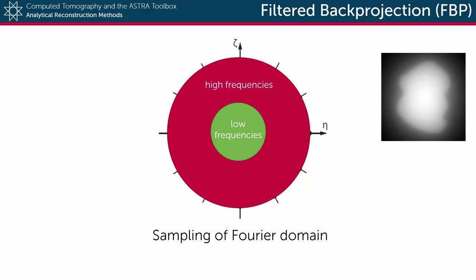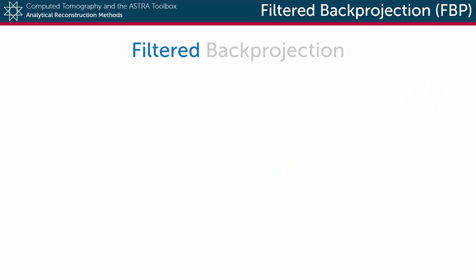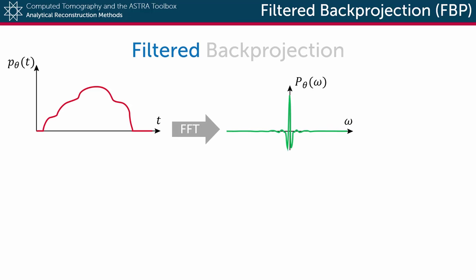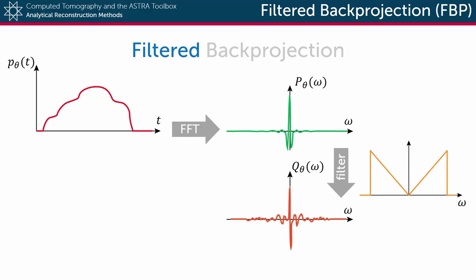But no worries, because we haven't touched on the filtering part of the FBP algorithm. The idea is that by applying a high-pass filter on the detector function, the low frequencies will be suppressed, such that they will not result in an overly blurred back-projected image. As is typical in signal processing, the filter on the detector function is applied in its Fourier domain. So first, this function is Fourier transformed using the fast Fourier transform method.